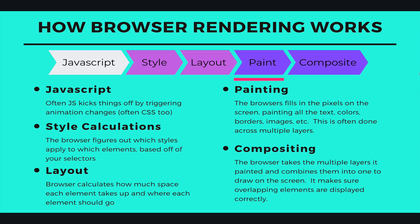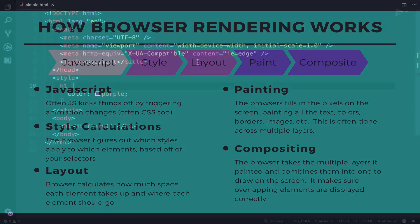Next up is painting — this is when the browser fills in the pixels, puts the visual information on screen, and this is often done across multiple layers. The last piece is compositing. This is when the browser takes those multiple layers, combines them, and draws them. Sometimes those layers overlap or have some opacity and translucency, which the browser handles in the composite phase.